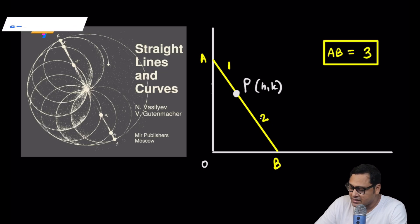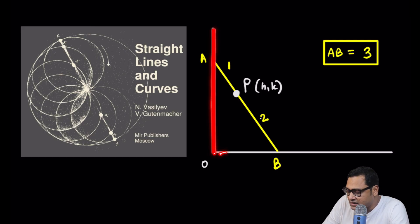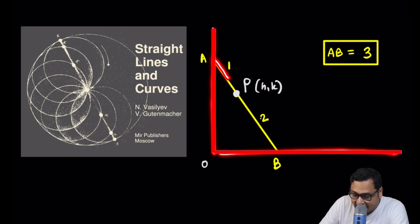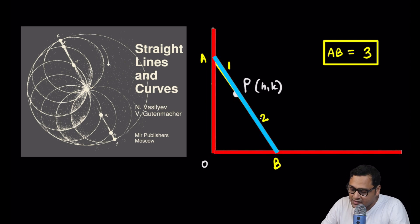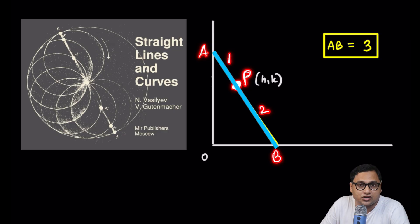Today we want to talk about one problem from Vasiliev's book. This one also came up in the ISI B-STAT B-Math entrance 2012. The problem says: suppose we have a wall and a ground, and there is a ladder which is slipping. The ladder is named AB, and there is a point P on the ladder that divides AB into a 1:2 ratio.